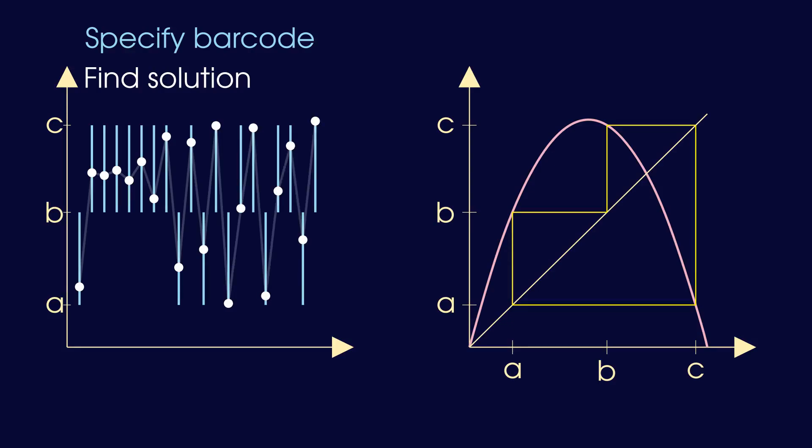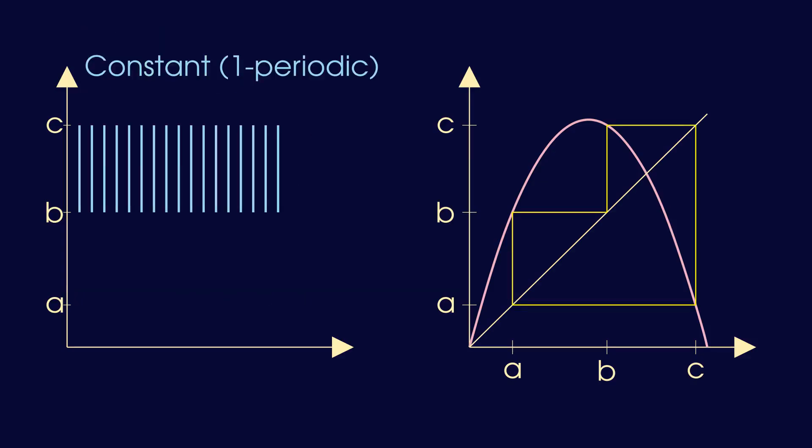If we were looking for the constant solution, for example, our barcode would have the upper interval, bc, at all times. And indeed, it turns out that there is a solution that follows this pattern.